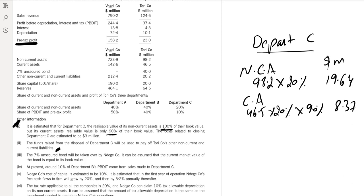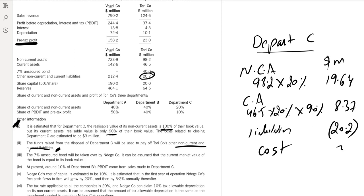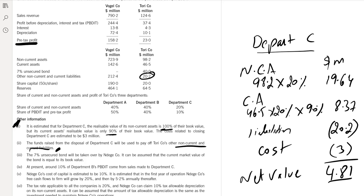The net value of Department C disposal is: 19.64 + 8.37 − 20.2 − 3 = 4.81 million. That is the benefit of Department C.